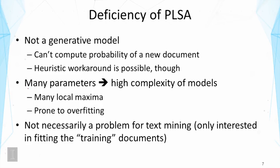Secondly, PLSA has many parameters. The model is very complex, and that means there are many local maxima, and it's prone to overfitting. It's very hard to find a good local maximum that truly represents the global maximum. In terms of explaining future data, PLSA may overfit the training data because of the complexity of the model — it is so flexible that it fits precisely what the training data looks like, and then it doesn't allow us to generalize the model to other data.